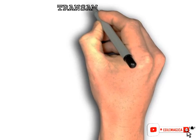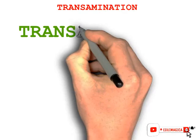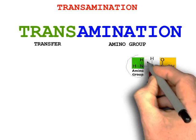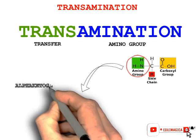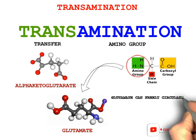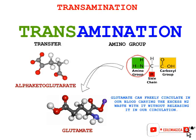Let's talk about transamination. If we look at the word 'transamination,' it is made up of two words — trans and amination — which basically means transfer of an amino group. What essentially happens is that the amino group in an amino acid, which contains nitrogen, is taken away from the amino acid and transferred to another molecule, alpha-ketoglutarate, which on receiving the group gets converted into glutamate. This glutamate can freely circulate in the blood, carrying excess nitrogen waste alongside it without releasing it directly into circulation. This is the first step that takes place before the urea cycle.